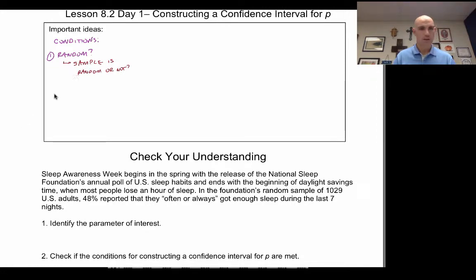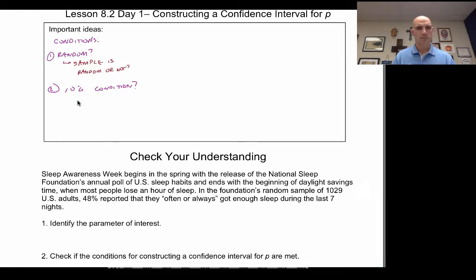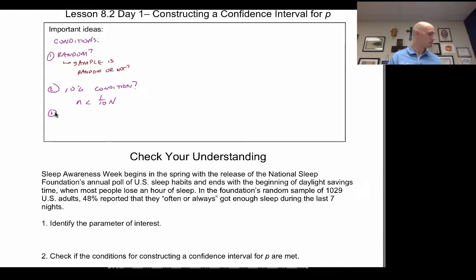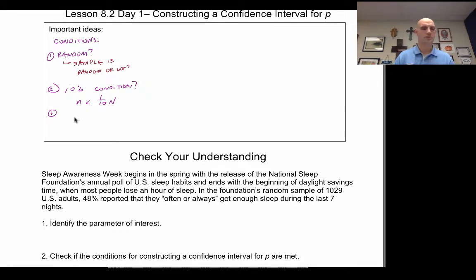The second condition is the 10% condition. Is my sample size less than one-tenth of the whole population? Meeting this condition allows us to make certain assumptions about the data and find certain things about what is possible.